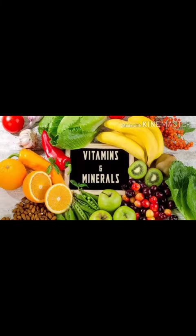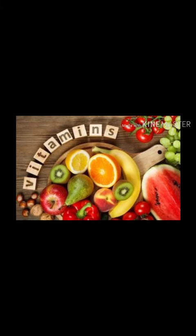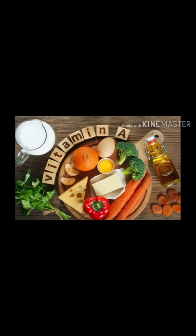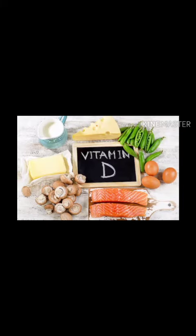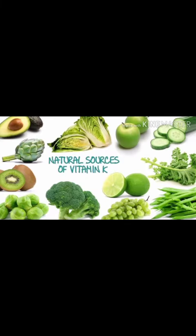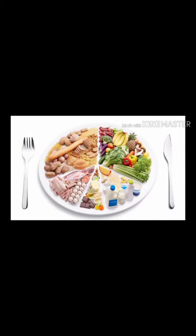Next come vitamins and minerals. These are nutrients which protect our body from diseases and keep us healthy, so they are known as protective food. There are many types of vitamins needed by our body — vitamin A, B, C, D, E, and vitamin K are the main types. Our body needs vitamins in small quantities only, and they are present in different food items, so we should include all such items in our diet.